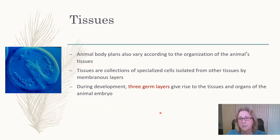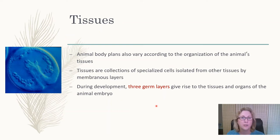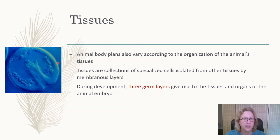During embryonic development, animals have two or three germ layers — most animals have three. The word 'germ' here is used in the sense of germinate or grow, not as in pathogen. Here we have a sea urchin embryo where we can see the three germ layers: the outer layer, or ectoderm, which forms the skin and the nervous system.